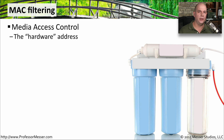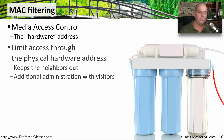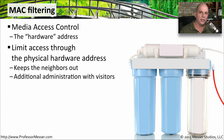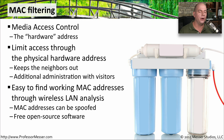Another method of wireless network security is MAC filtering, referring to the Media Access Control address — the hardware address in our wireless devices. MAC filtering allows or disallows access to the wireless network based on the hardware address of devices. We can maintain a list so only devices on that list gain access, which can be useful to keep neighbors out or ensure only authorized devices, such as excluding visitors from a corporate wireless network.